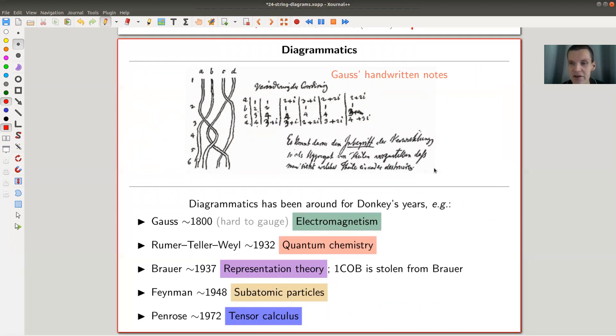It's a bit hard to gauge, but there's a lot of Gauss's handwritten notes and Gauss managed to write down or already thought about string diagrams, as you can see here. For the experts, they were thinking about braids and kind of how braids arise, braiding numbers, linking numbers,